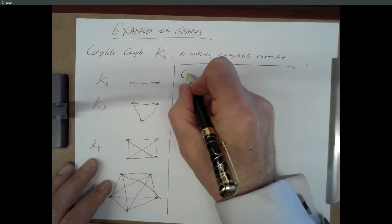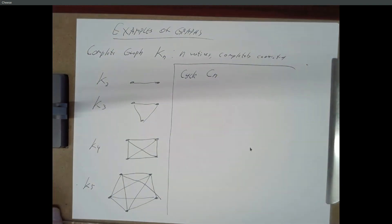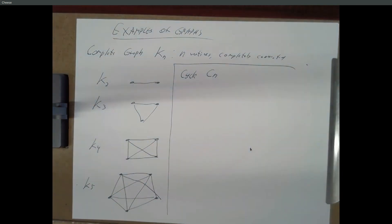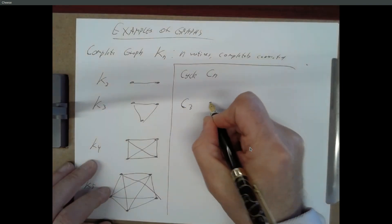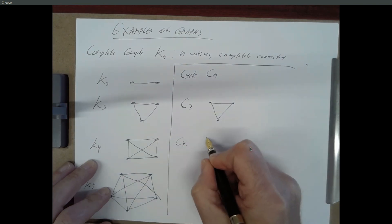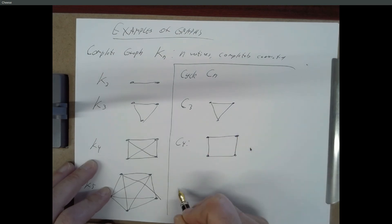All right. A cycle. C sub N is N vertices. With just a line of connections from one to another to another going back to the first. So, C3 looks the same as K3. C4 looks like this. C5. Looks like that and so on. C1.